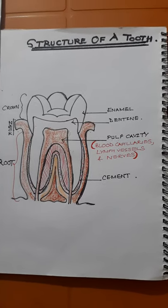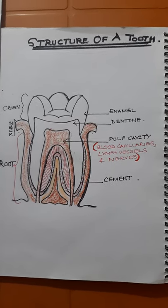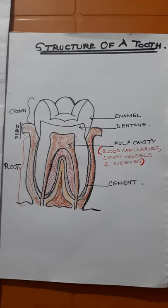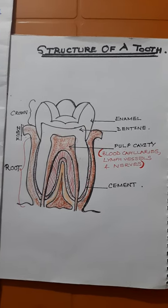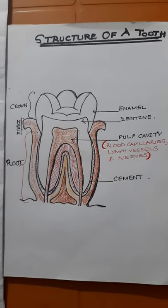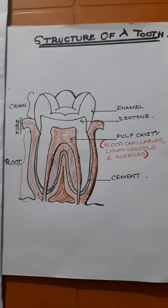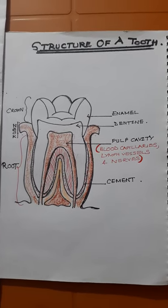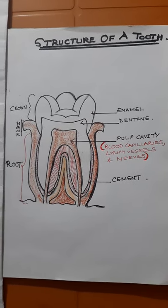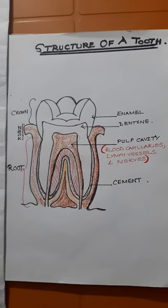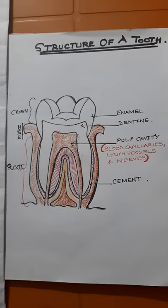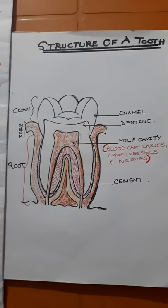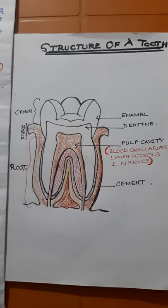Hello children, today we shall do the structure of a tooth. All teeth — there are different types of teeth: incisors, canines, premolars, molars. There are different types of teeth, but in general the structure is the same.